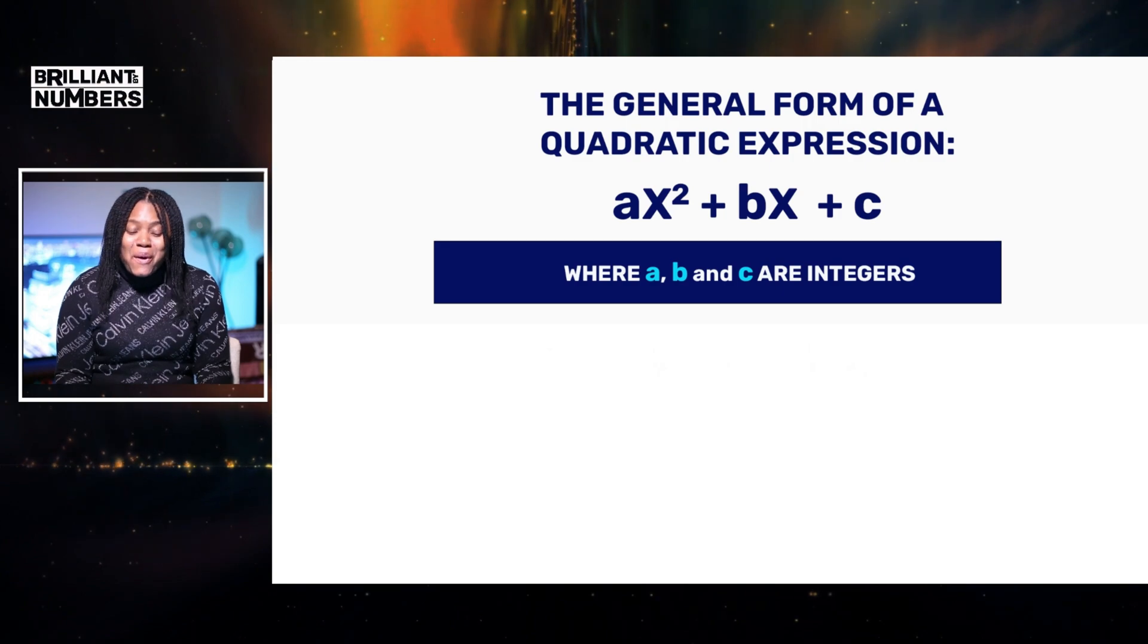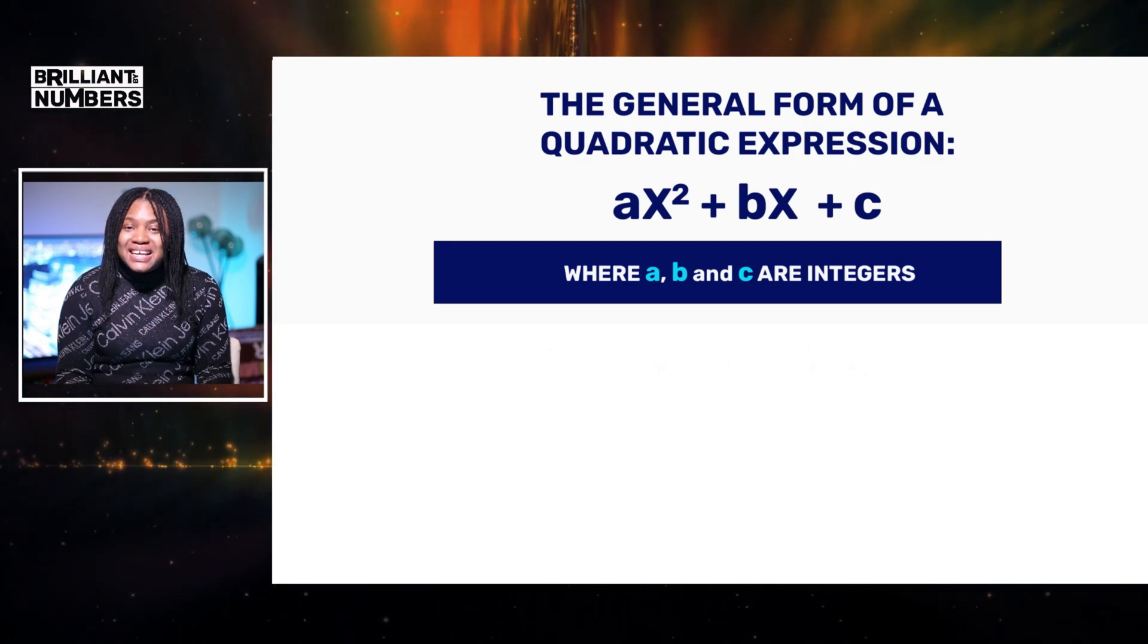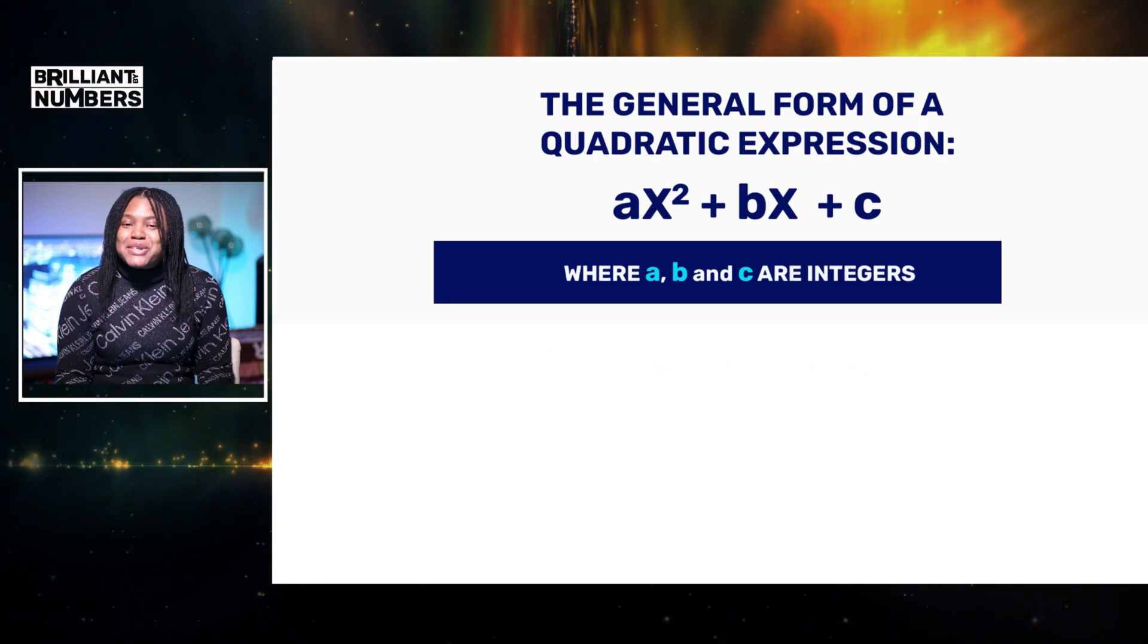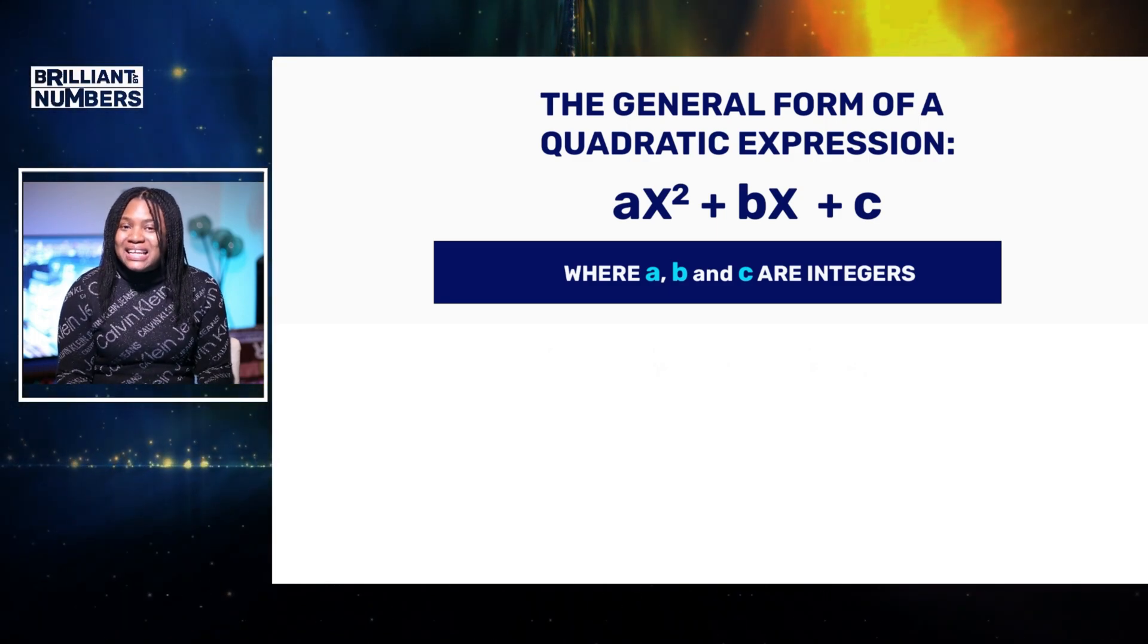The general form of a quadratic expression is ax squared plus bx plus c, where a, b and c are integers. So we're now going to explore an example that helps us to identify a, b and c.